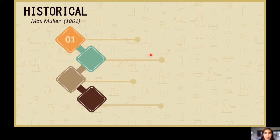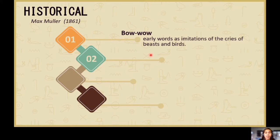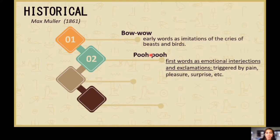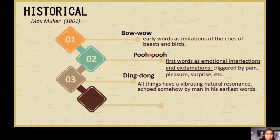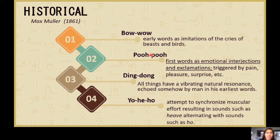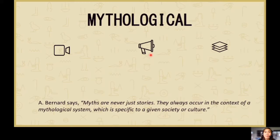Historical origin is from Max Mueller, 1861. We have the Bow-wow theory, wherein it refers to imitation of the sounds around us — the cries of beasts and birds. Pooh-pooh is emotional interjection, more of pain. Yo-heave-ho is about muscular effort, like lifting something heavy. So we got this language from the sounds we get from the environment, and from there it developed and evolved.